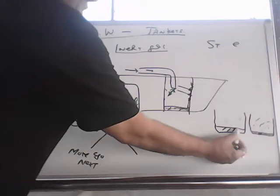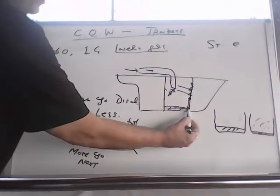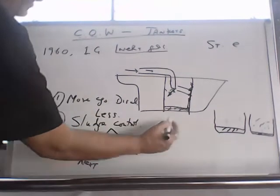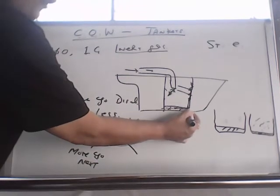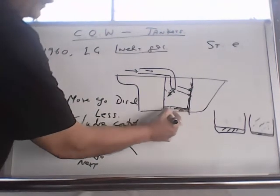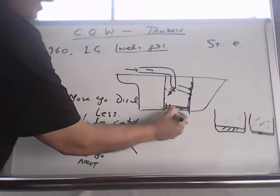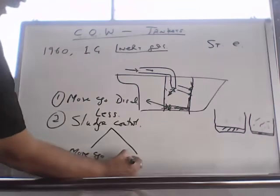Second benefit is if you have less sludge. So you can discharge more cargo. Because more cargo will be flowing aft to the pell mouth and it gets discharged. So more cargo is discharged.